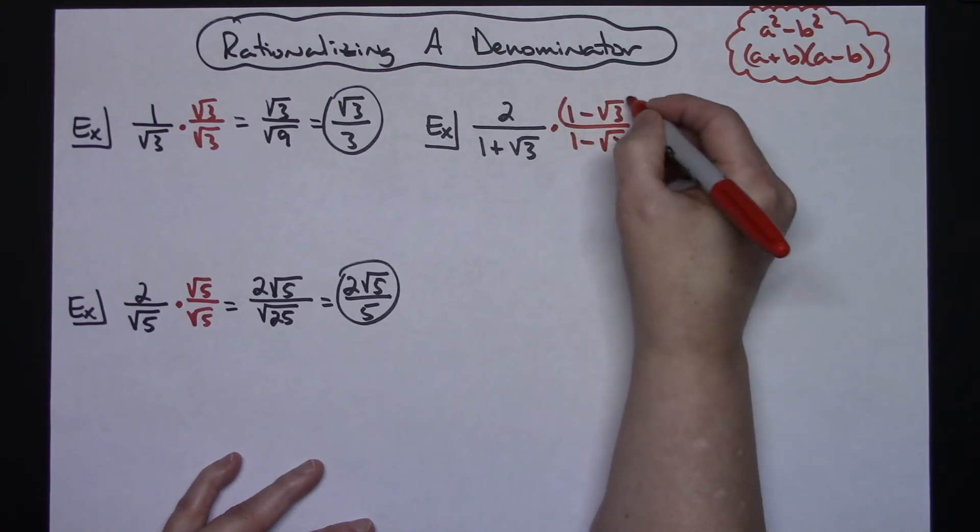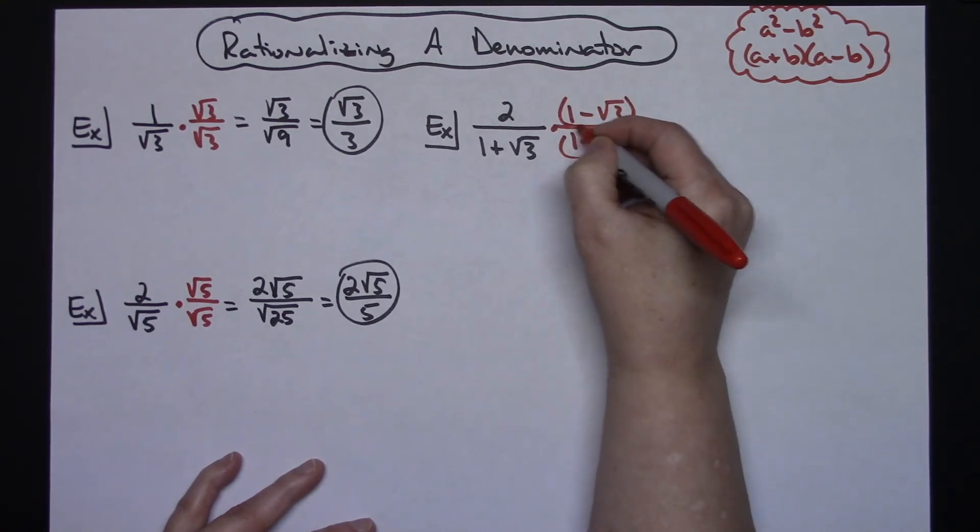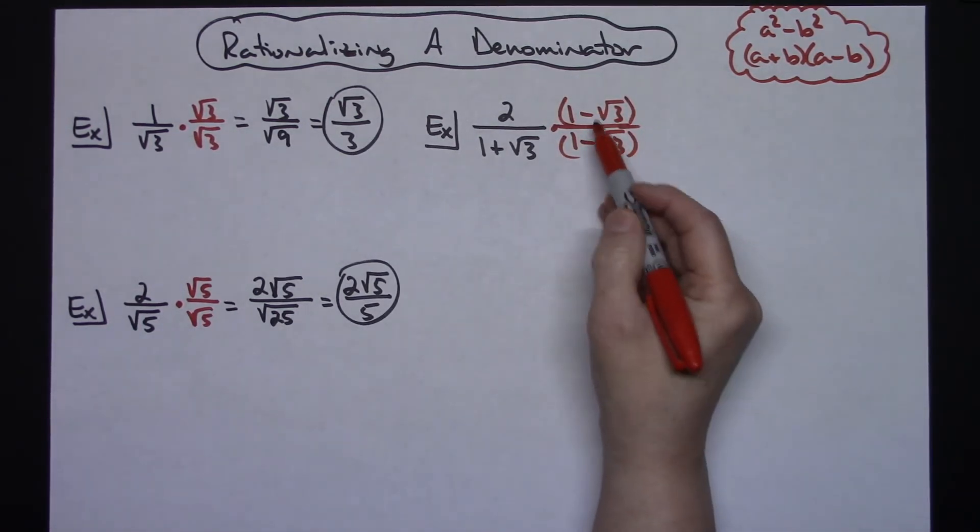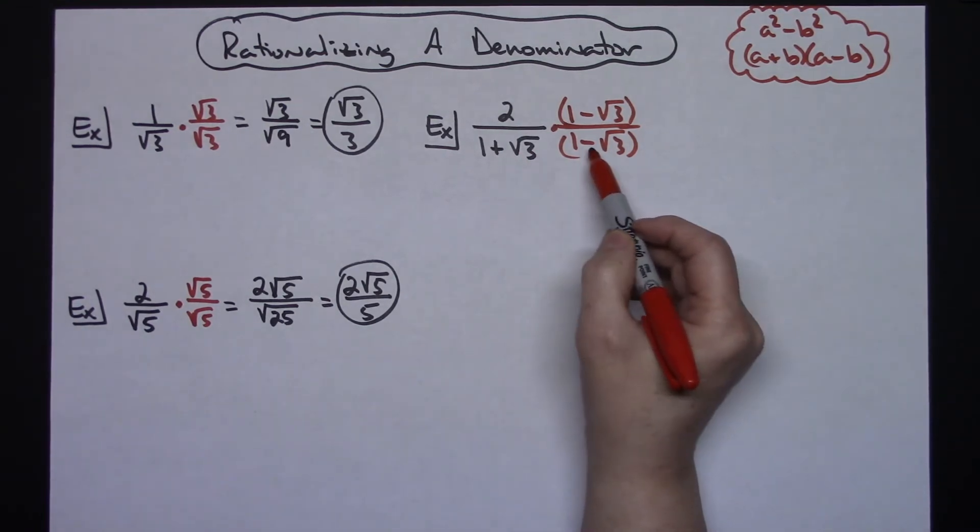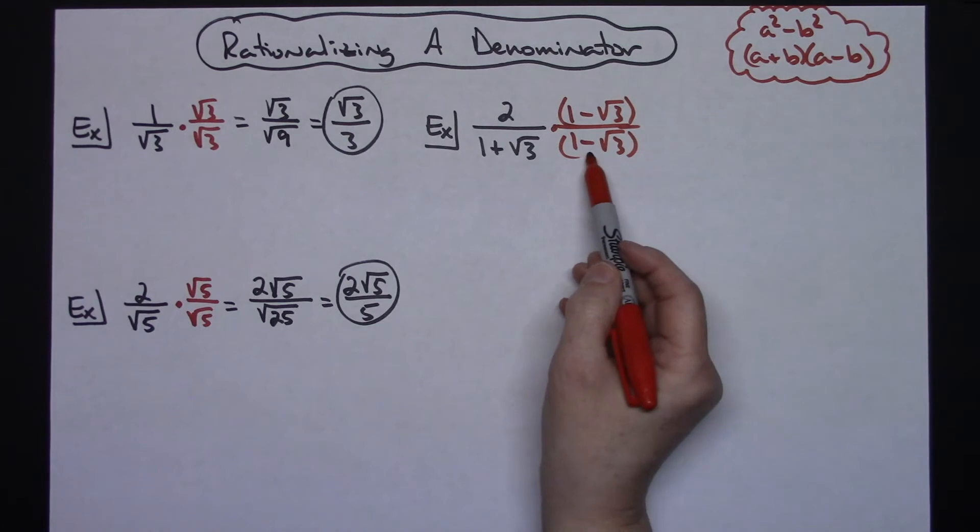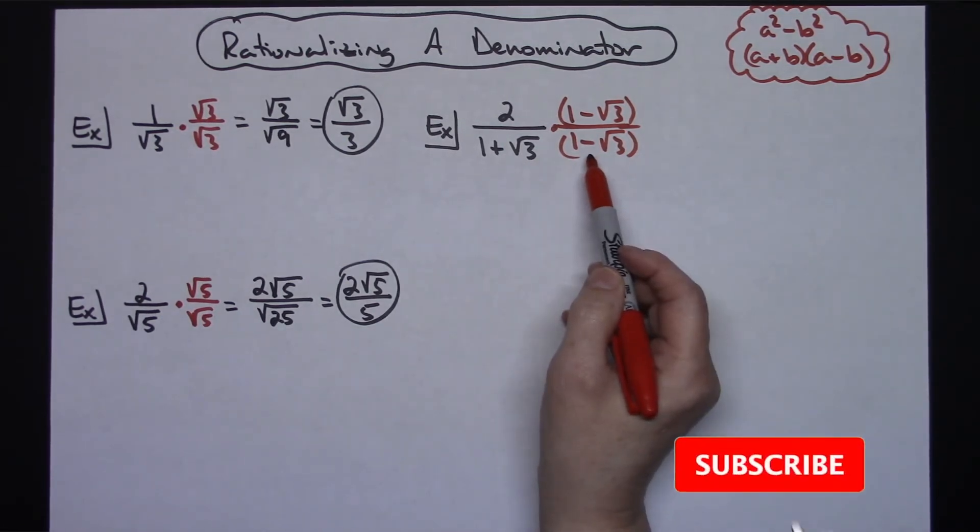And let's do little parenthesis on top, little parenthesis on the bottom, just so we can kind of see that. It is still a form of 1, but it is a conjugate and I'm doing it on purpose so that I can real easily multiply this denominator out.